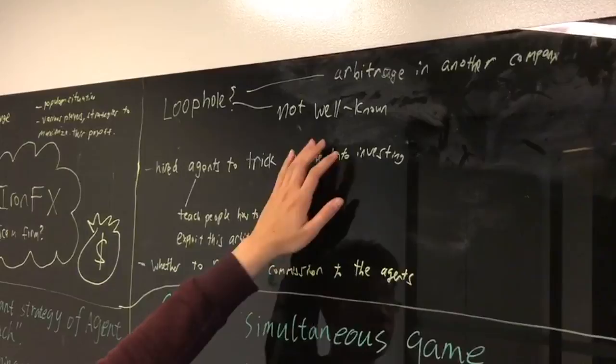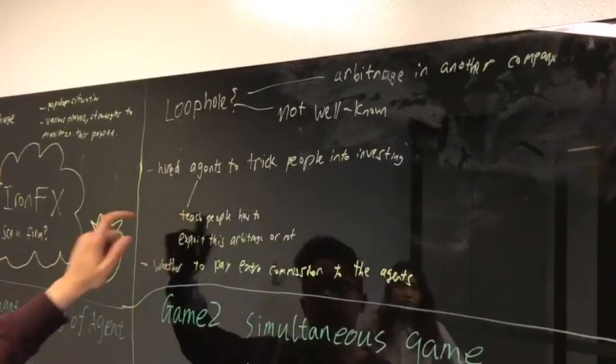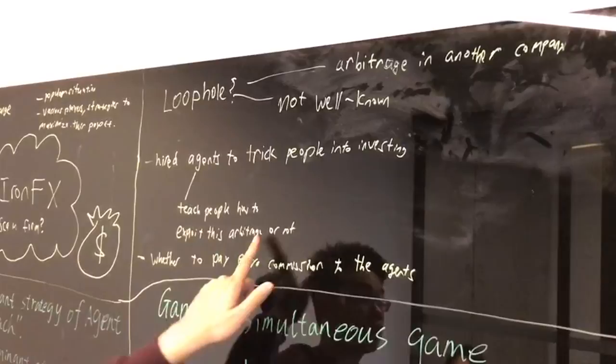In the game that my friend would be explaining afterwards, there would be two players. One of them would be these agents hired by INFX to trick people into investing, but they have the choice. Their strategy is to decide whether they want to teach people how to arbitrage or not. And the other player in this game is the firm itself, INFX.